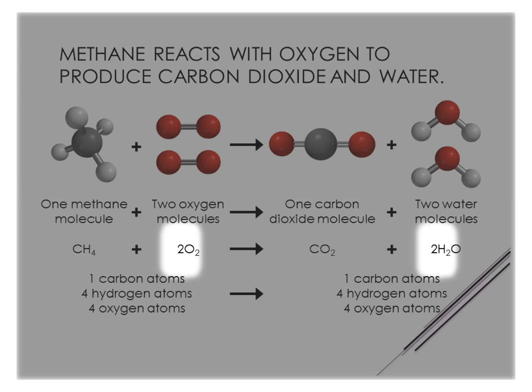The other thing we see in our equation is a coefficient. Here we have a coefficient in front of oxygen and in front of water. Note that we have subscripts within the formulas because they show how that compound exists all the time, not just in the context of this reaction. The coefficients are there so that we can have a balanced chemical equation. An important thing to remember is the law of conservation of mass: during a chemical reaction, matter is neither created nor destroyed. So if I have one carbon atom on the left side, I must have one carbon on the product side; four hydrogens on the left, four hydrogens on the right; four oxygens on the left, and four oxygens on the right. We use coefficients to ensure that the number of atoms of each type is equal on both sides of the equation.